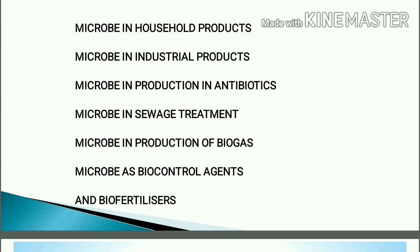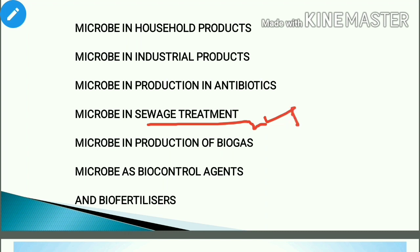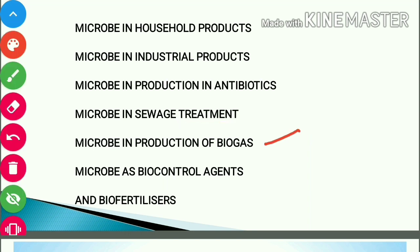The next point is microbe in sewage treatment — treating organic waste so that harmful pathogens are eliminated. Microbes also play a very important role in biogas production. For example, methanogen bacteria, which are archaea found in cow dung, help extract biogas from organic matter.